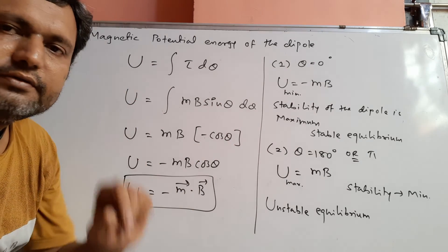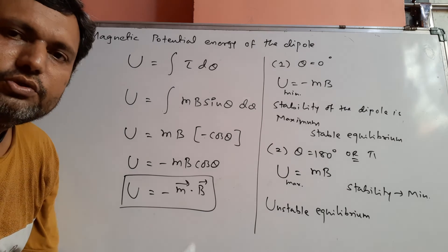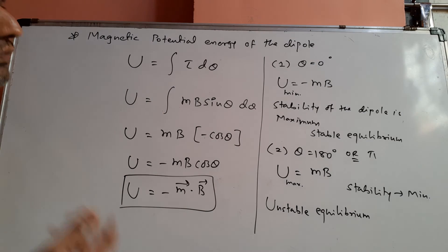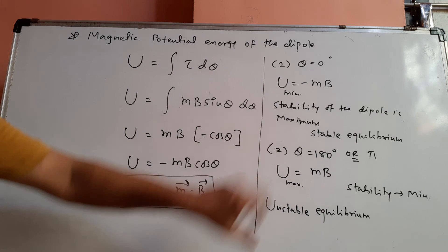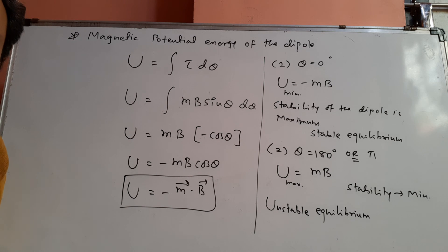At theta equals 90 degrees, the torque formula gives MB sin theta, and since sin 90 is 1, the torque is maximum. This is also called neutral equilibrium. These are the basic concepts about the potential energy of a magnetic dipole, including the derivation and the special cases, which are very important for solving MCQ and short-answer questions.